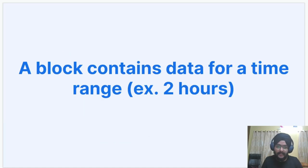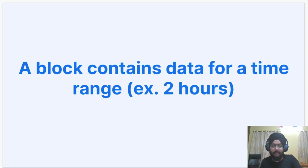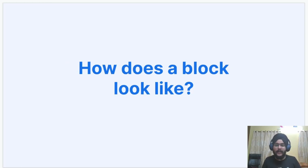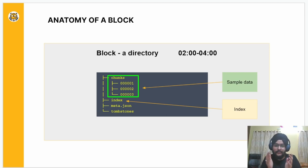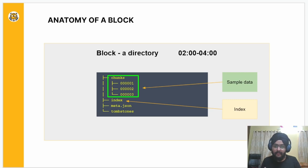Let's start with understanding what a Prometheus block is. A block in Prometheus is a basic unit of data storage that stores two hours' worth of data. On a high level, the block contains two things: samples data and index. Sample data is the data that Prometheus scrapes from the targets and stores inside the chunks directory. The index is the actual indexing structure that Prometheus uses for query evaluation.